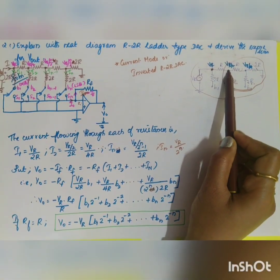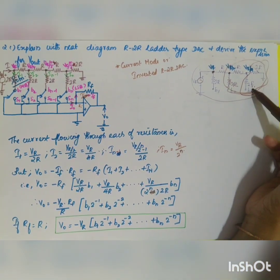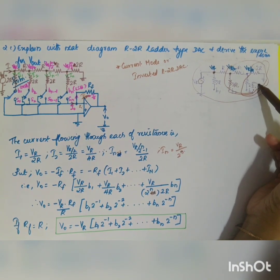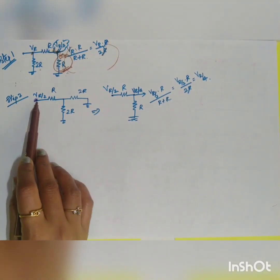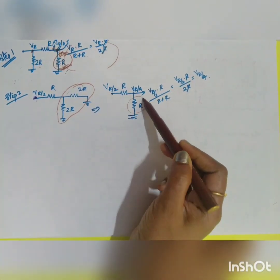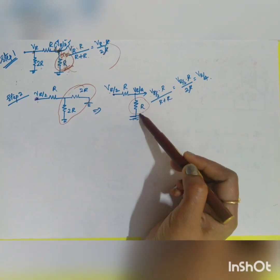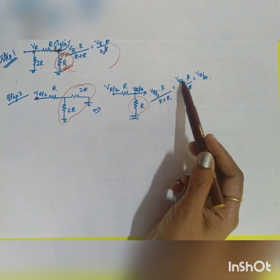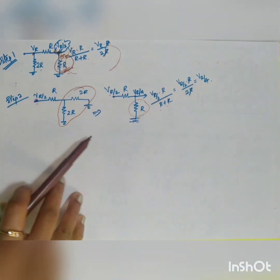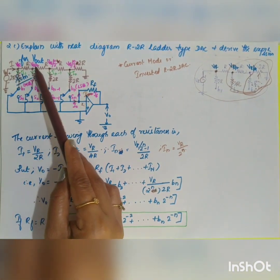Similarly, the source voltage becomes VR/2 for the next stage. To find the next node voltage, 2R in parallel with 2R gives equivalent resistance R. Applying the voltage division rule with source voltage VR/2: you get VR/2 divided by 2, which equals VR/4. For N number of stages, you can extend this. This is the general equation for finding node voltages.